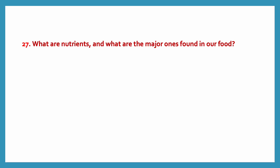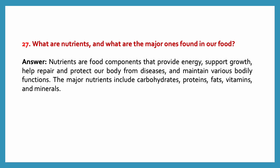What are nutrients and what are the major ones found in our food? Nutrients are food components that provide energy, support growth and help repair and protect our body from diseases and maintain various bodily functions. The major nutrients include carbohydrates, proteins, fats, vitamins and minerals.